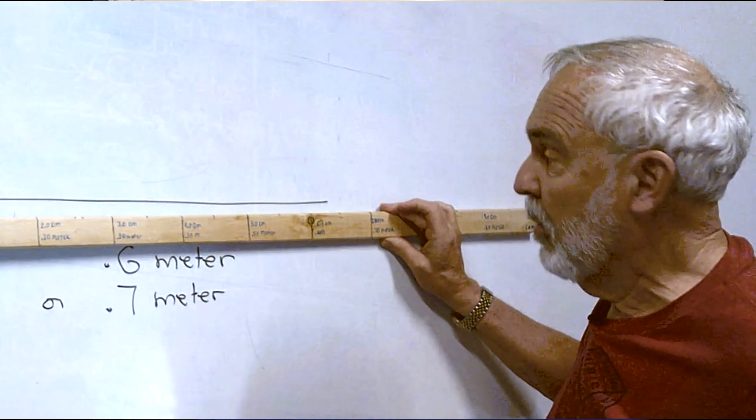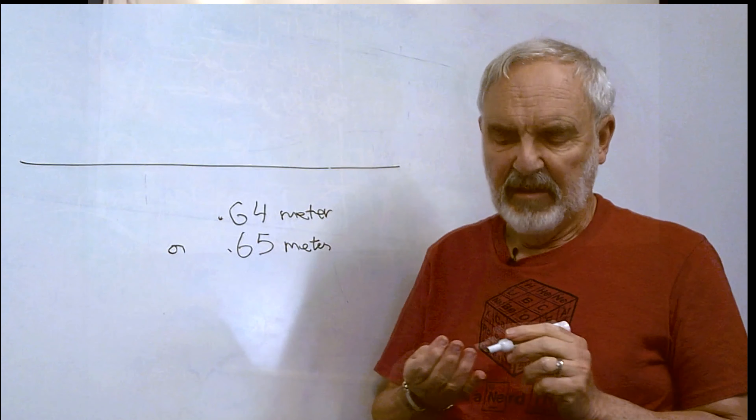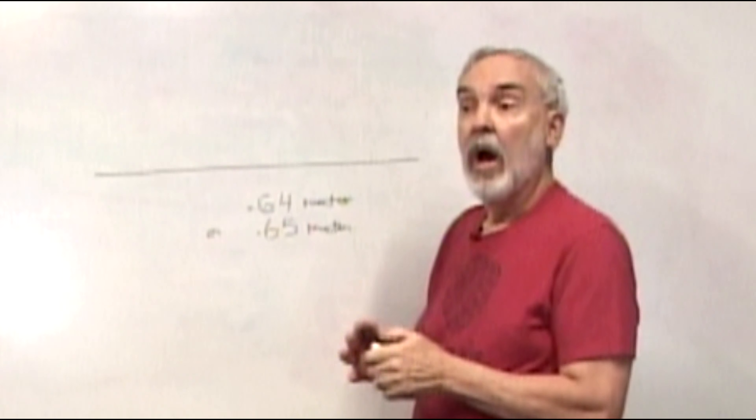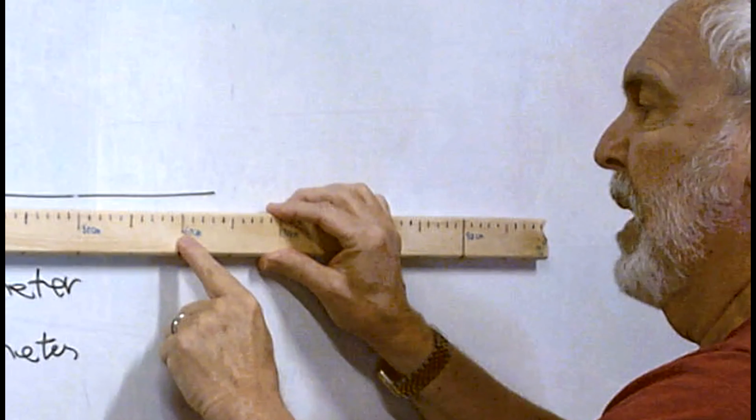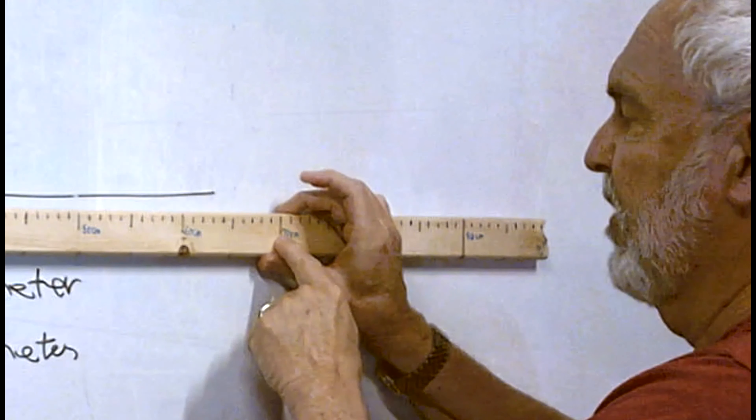I saw it on the meter stick, but this number is still a guess. I always have the last digit in a number as the estimate. If I want more accuracy, between .6 meters to .7 meters I've got 10 marks and I'm going to estimate in between here.